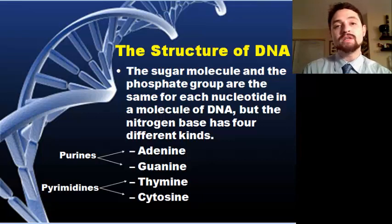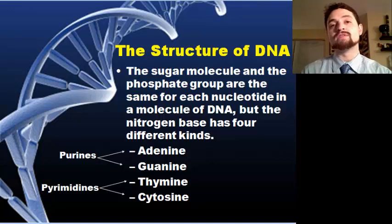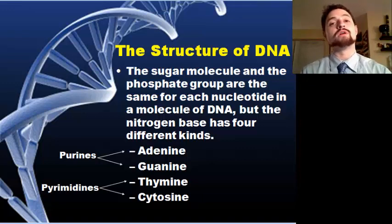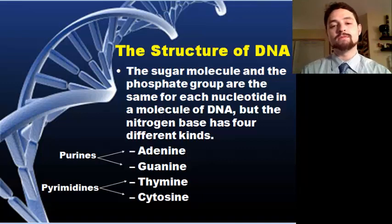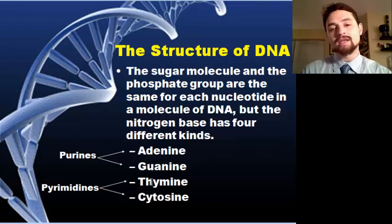The nitrogen bases change, and there are four different nitrogen bases that you can find. The order that those four nitrogen bases exist in will determine the function of that piece of DNA. The four types are adenine, guanine, thymine, and cytosine.